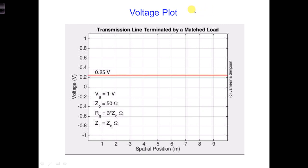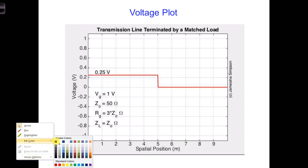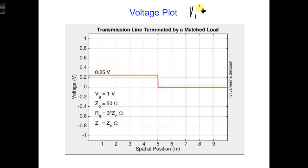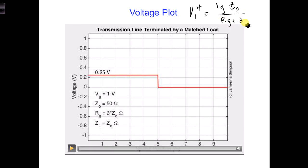In this case, V1 plus will be equal to Vg times Z-naught over Rg plus Z-naught.